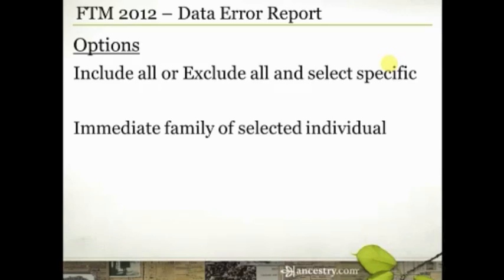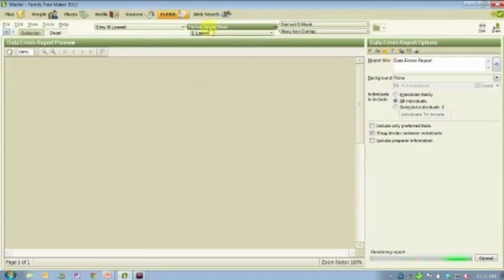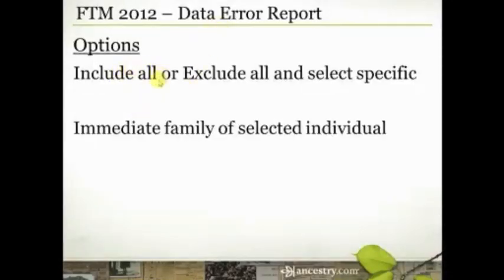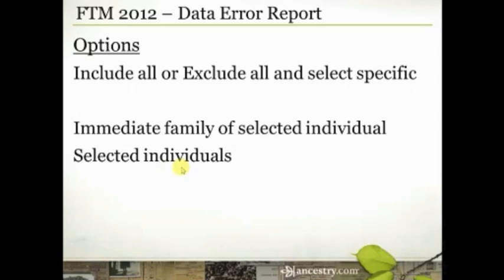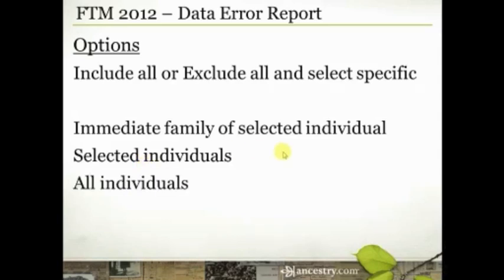You also have the option of running these reports against specific groups of people. For example, I'm currently on Harriet Jessie Meek — I could run the report against her immediate family, or against a set of selected individuals. Rather than running it against my entire tree, maybe I want to run it against all ancestors of my grandfather, not everybody on my mom's side and all the cousins and descendants. So I can do that — immediate family, all individuals in my tree, or selected individuals.